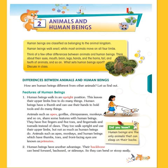For example, think about their eyes, mouth, brain, legs, hands, and the horns, tails, and teeth of animals. Animals have different eyes, different mouths, and different legs. We also have different eyes, different mouths, different hands and legs, and so on.